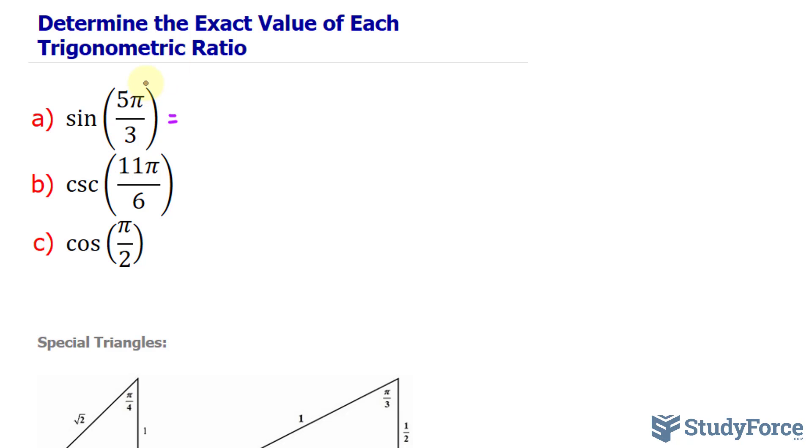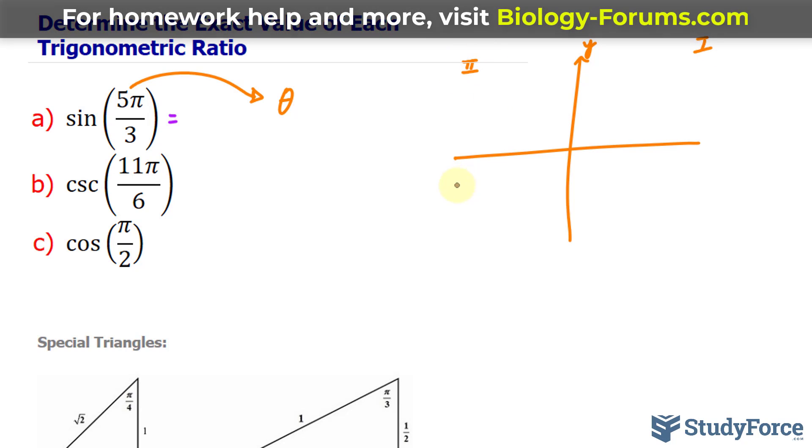The first thing I want to do is assign this as theta, just for reference. And we want to know where 5π over 3 radians lies in a polar plane or XY plane that looks like this. Does it lie in the first quadrant, the second, third, or fourth?